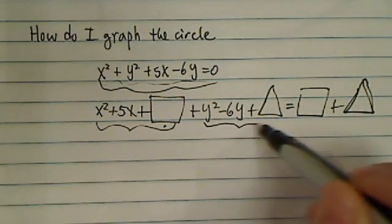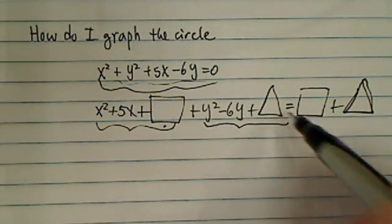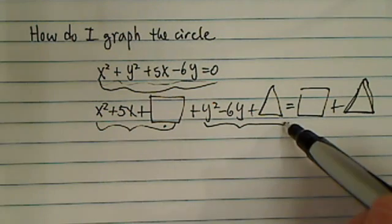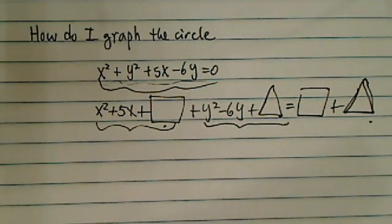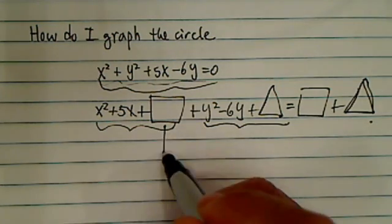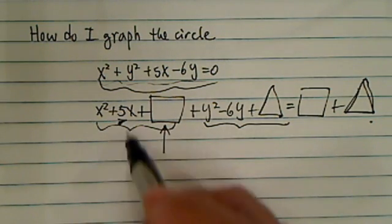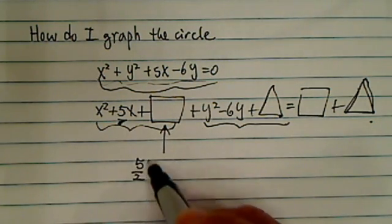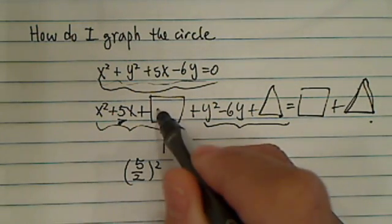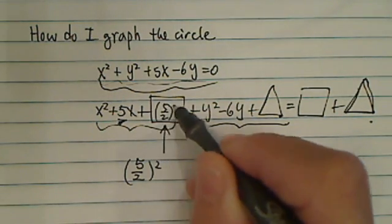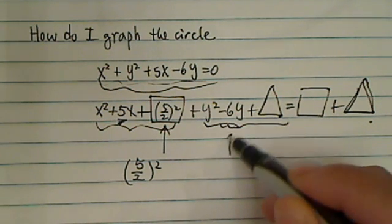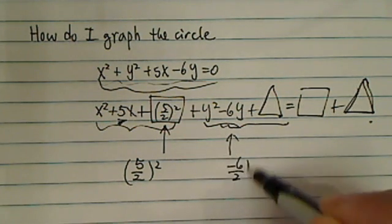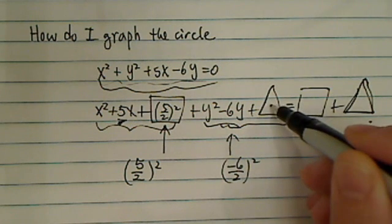Next thing I need to do, I do the same thing for the y. I need to add a magic number over here and group it and make it a perfect square. Since I added a triangle number here, I need to add another number over there. The number I need to put in there is half the coefficient in front of x and square it, 5 over 2 squared. Same thing over here.